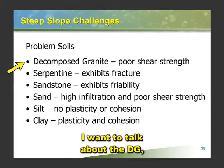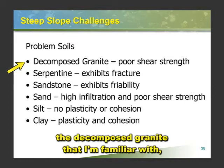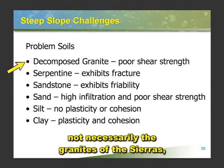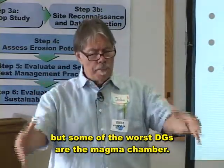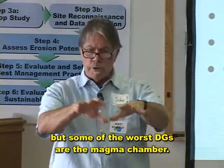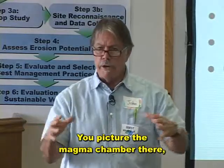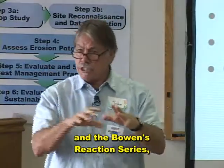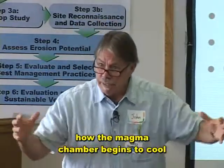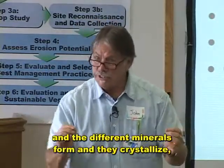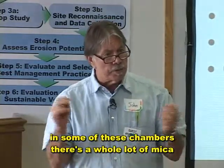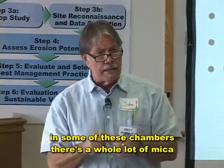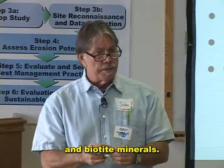I want to talk about the DG — the decomposed granite that I'm familiar with, not necessarily the granites of the Sierras — but some of the worst DGs come from the magma chamber. You picture the magma chamber in Bowen's reaction series, how the magma chamber begins to cool, different minerals form and they crystallize. In some of these chambers, there's a whole lot of mica and biotite minerals.